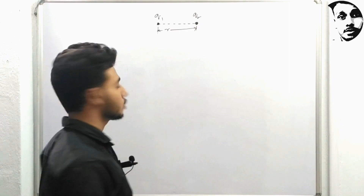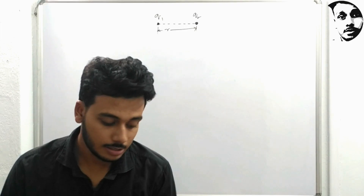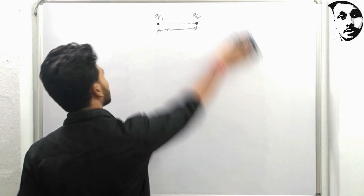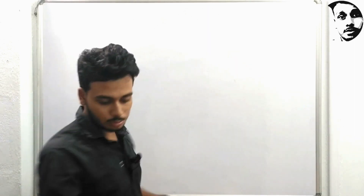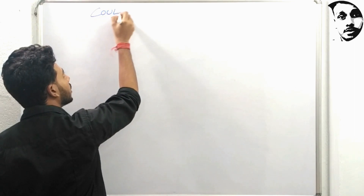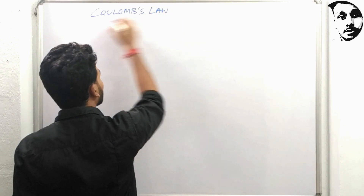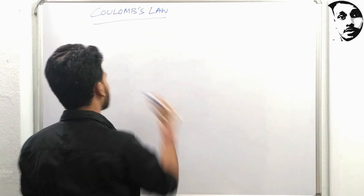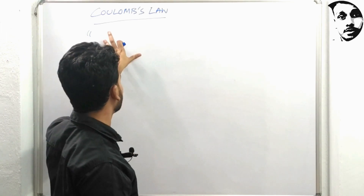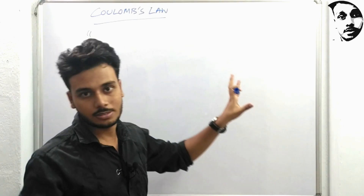What is this Coulomb's law? The statement of Coulomb's law — C-O-U-L-O-M-B-S law. Don't memorize the statement of Coulomb's law; it is quite simple. You can just visualize what's happening and then write it down.